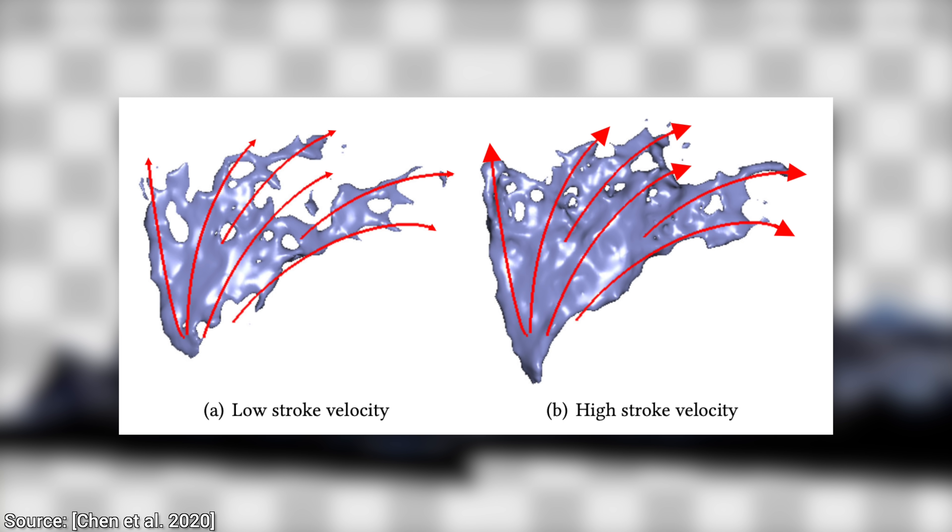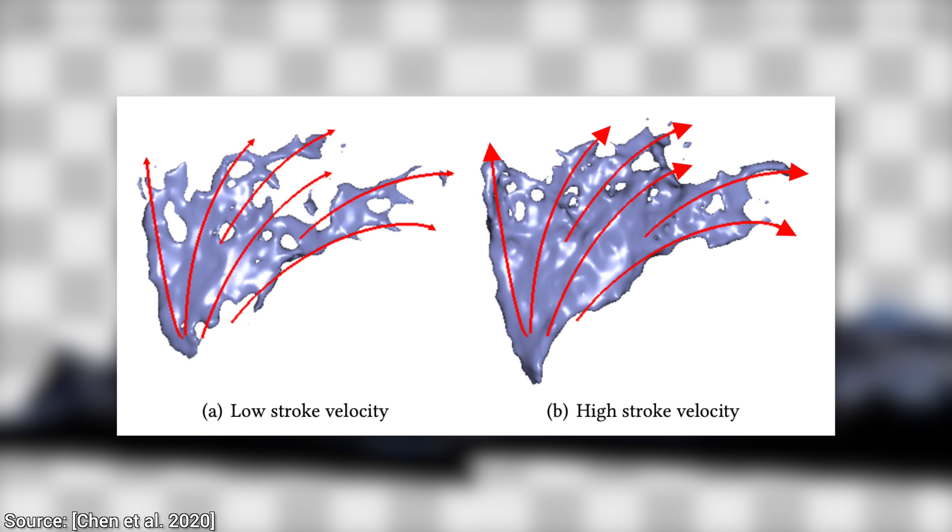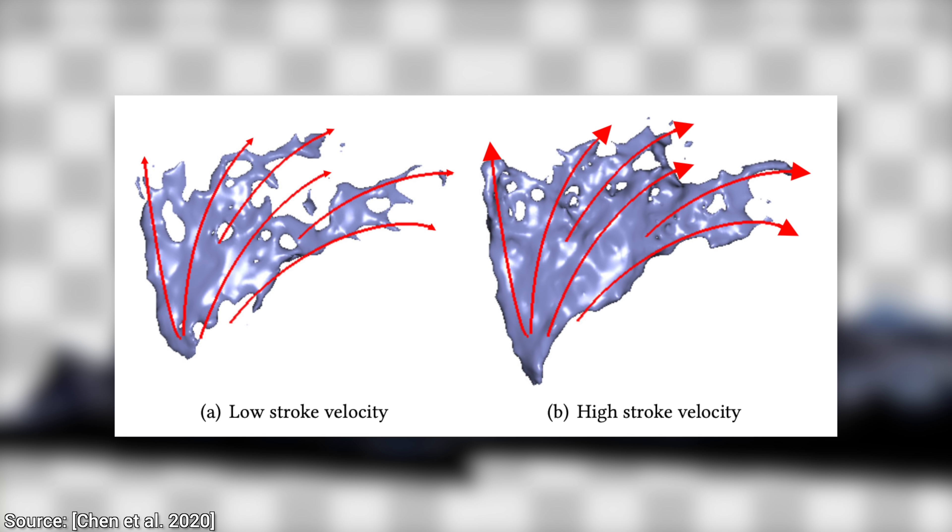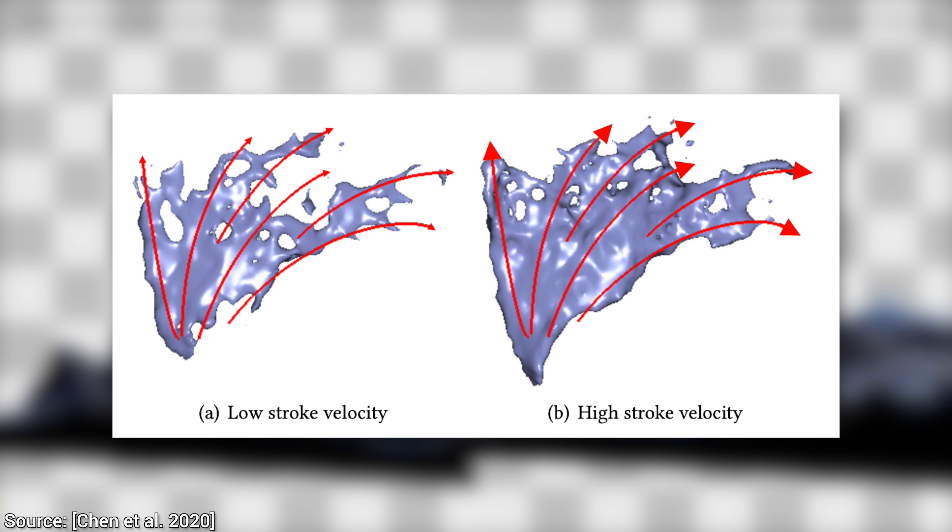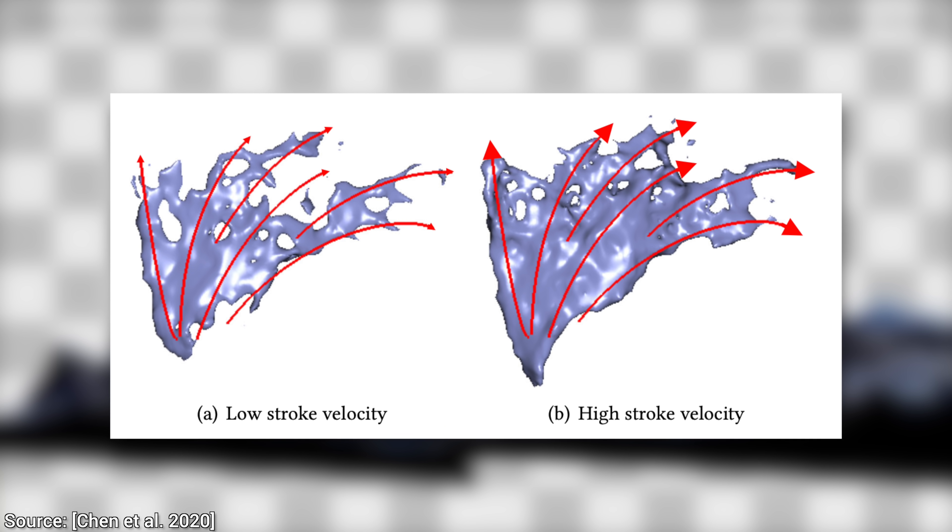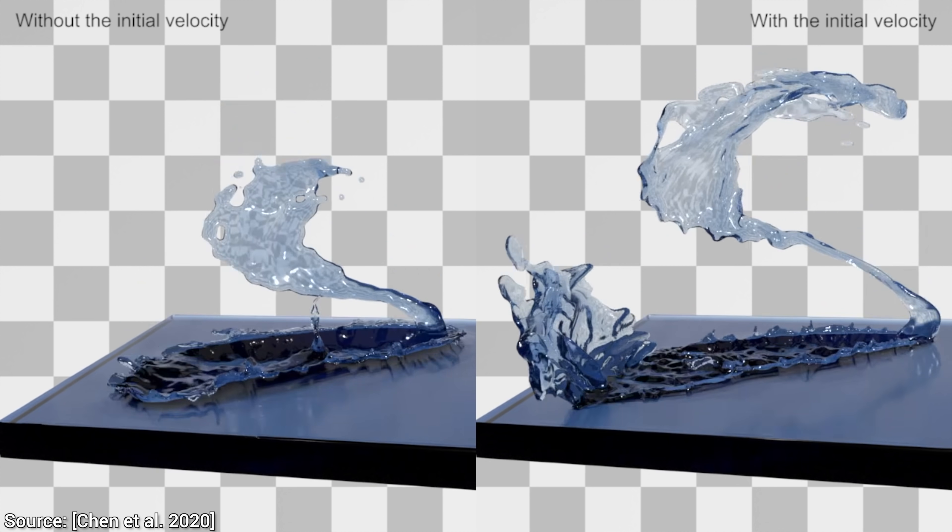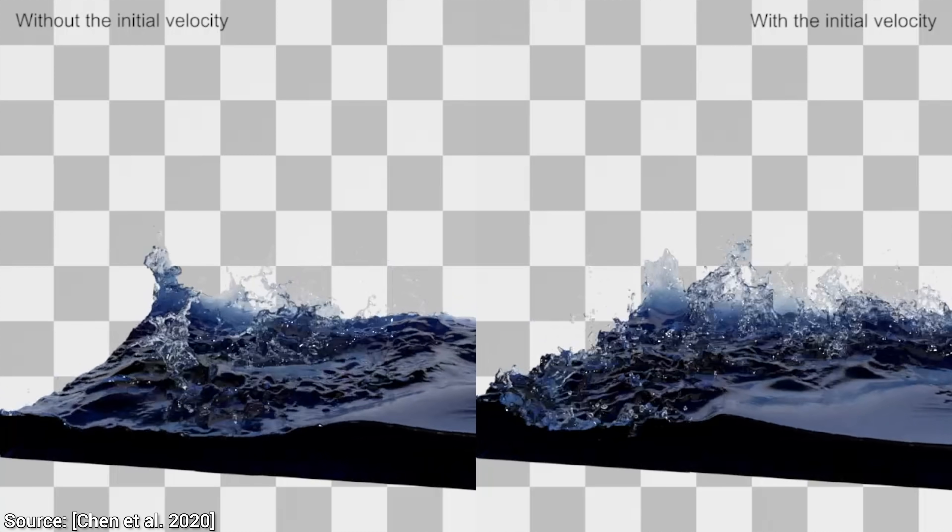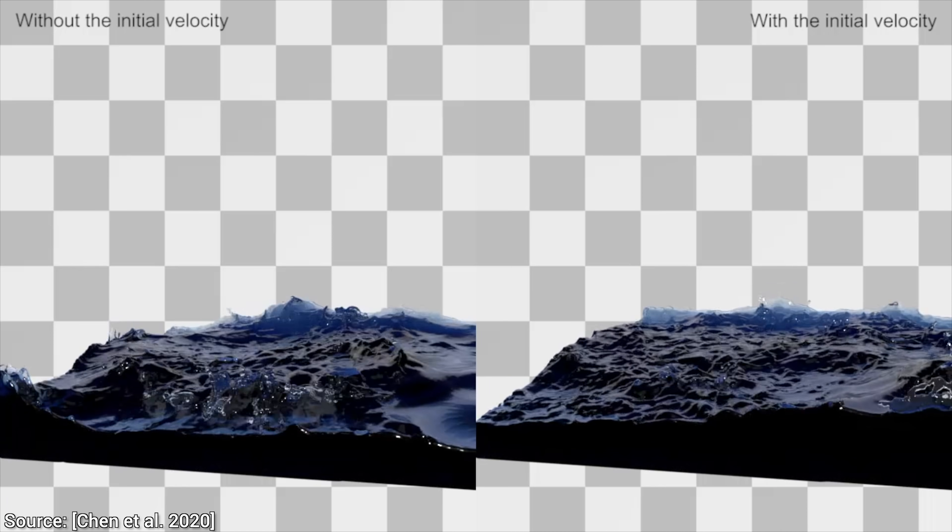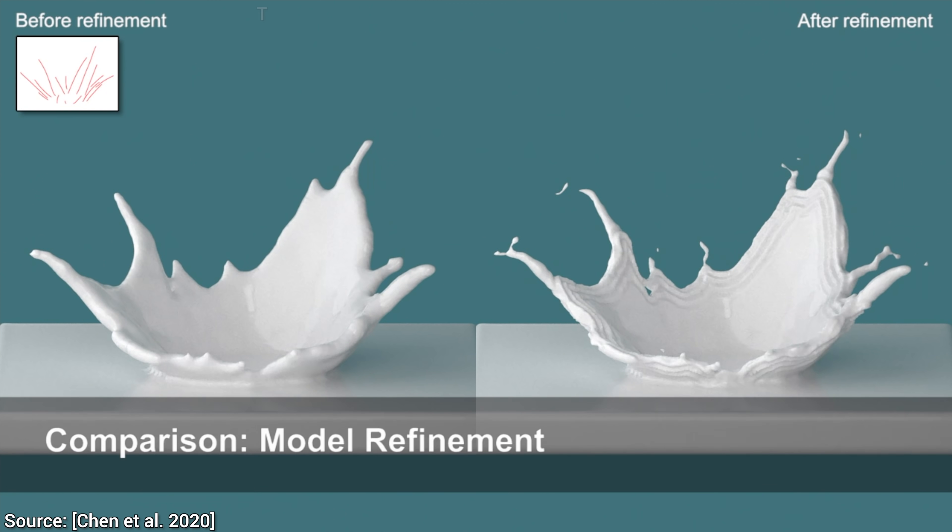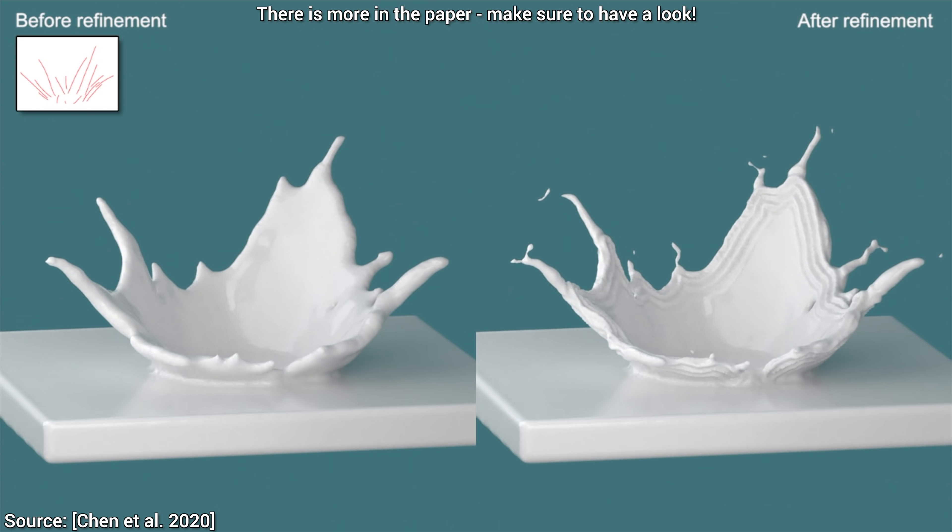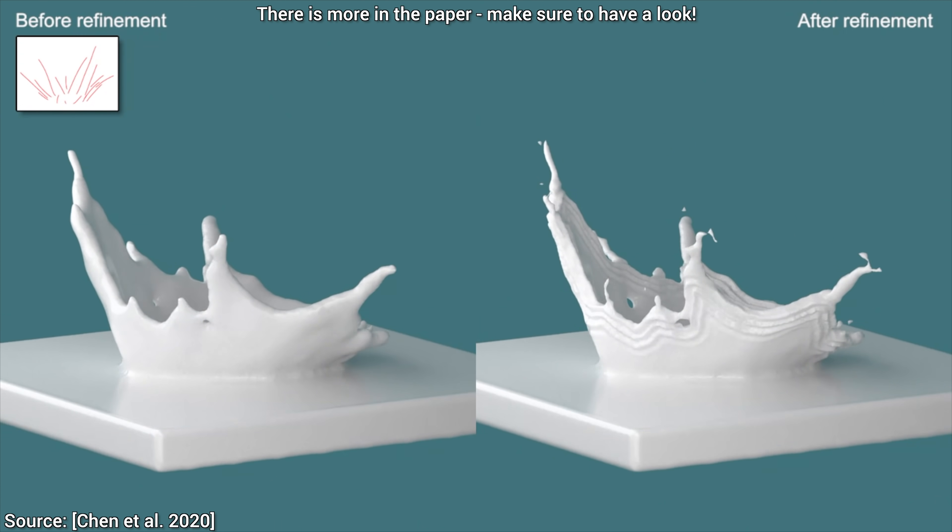The technique also goes the extra mile beyond just sketching. Look, for instance, your brush strokes can also describe velocities. With this, we can not only control the shape but even the behavior of the fluid too. So there we go. Finally, a learning-based technique gives us a proper solution for fluid control.